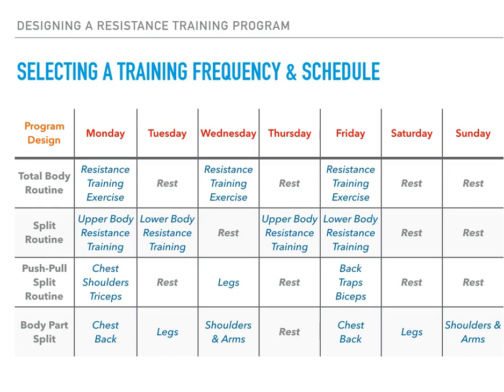Last but certainly not least, the fourth row is what we refer to as the body part split. This routine allows us an opportunity to focus primarily on specific body parts. In the middle of the week, we would have a day of rest. On the next three days, we'd repeat the routine in the same order we did at the beginning of the week.